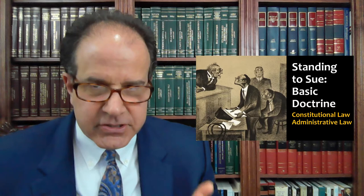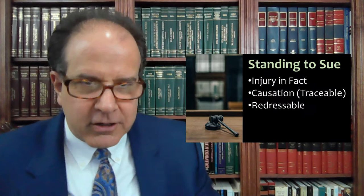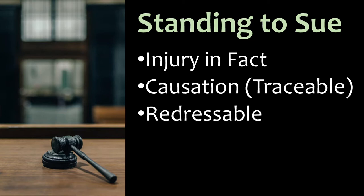So always ask yourself that. When we're talking about standing, the question is who has standing? Who is the right person to be bringing this case or controversy before the court? Our classic formulation of standing has three prongs: injury in fact, causation — or in modern cases, we're talking about whether the injury is traceable to the challenged conduct — and whether it is redressable by the courts. So if you've suffered an injury that the courts can't really do anything about, then you don't have standing to sue.